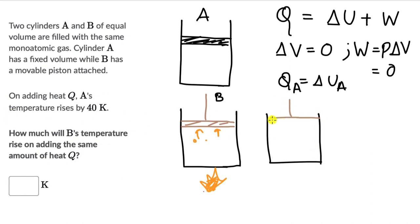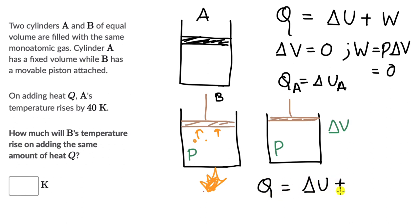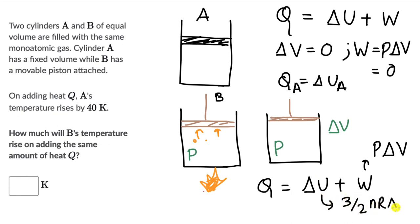The piston will stop moving when the gas regains its original pressure P. Because of this, there is some change in volume — delta V — so there is work done by the gas. Using the first law for the second case: Q equals delta U plus W, where W is P delta V. Delta U for a monatomic gas is 3/2 nR delta T. So heat added to cylinder B equals 3/2 nR delta T plus P delta V.